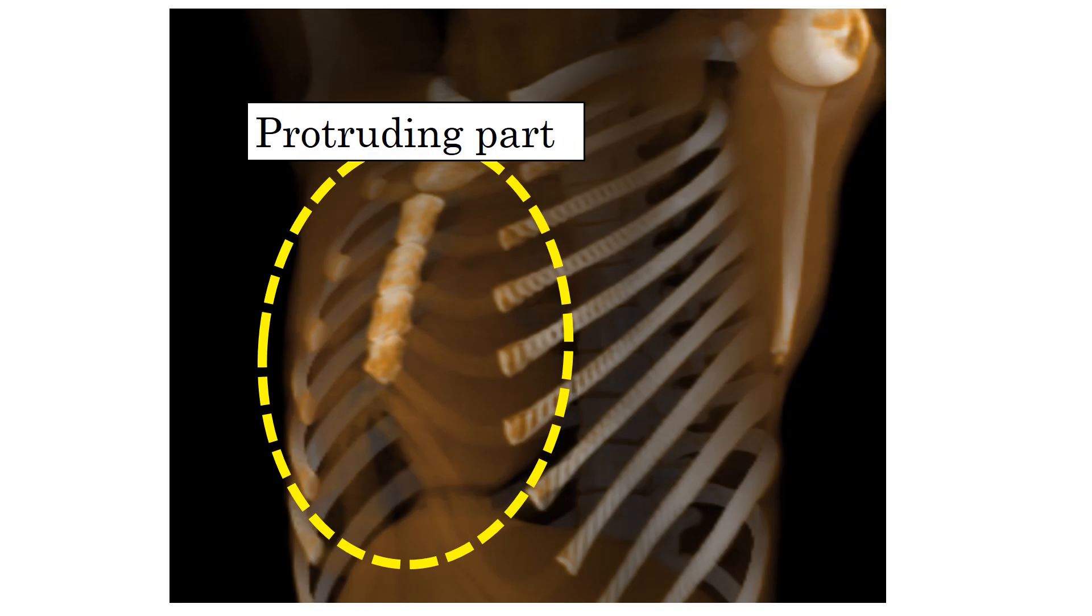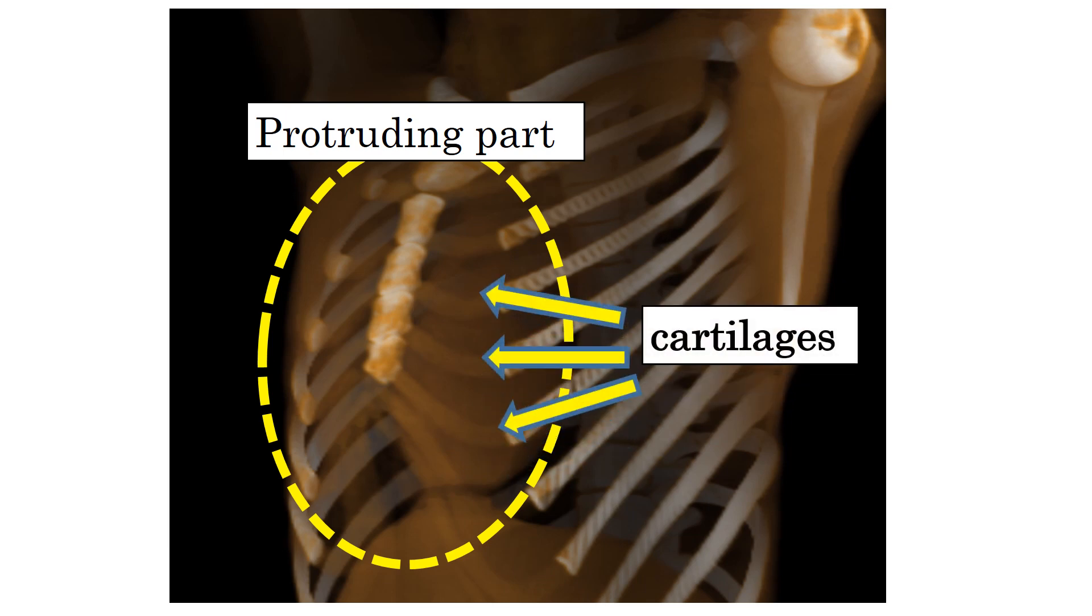3. The protruding part of the chest mainly consists of cartilage. Cartilage is flexible and bends when we push it. So, when the surgeon pushes the protruding part of the patient's chest,